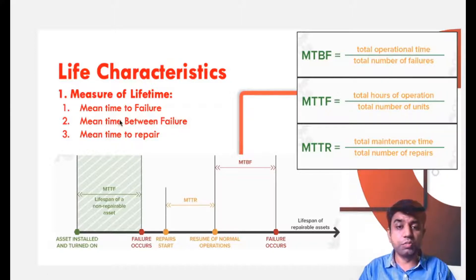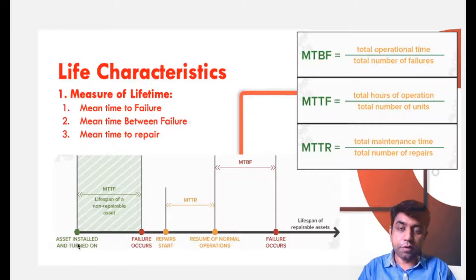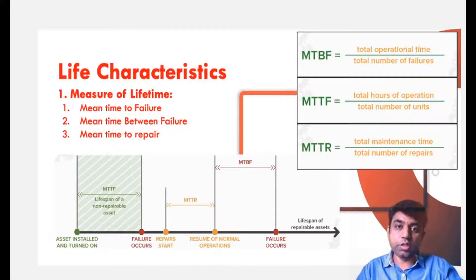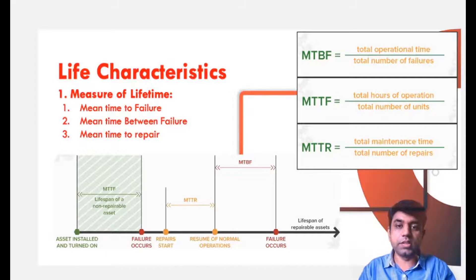First is mean time to failure. The asset is installed and we start using it. From that point of time, until and unless it fails, that time duration is nothing but mean time to failure. We started using some product and it fails for the very first time — the entire time duration between those two time intervals is mean time to failure.